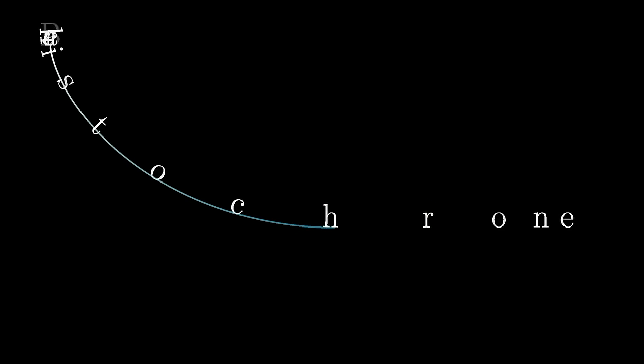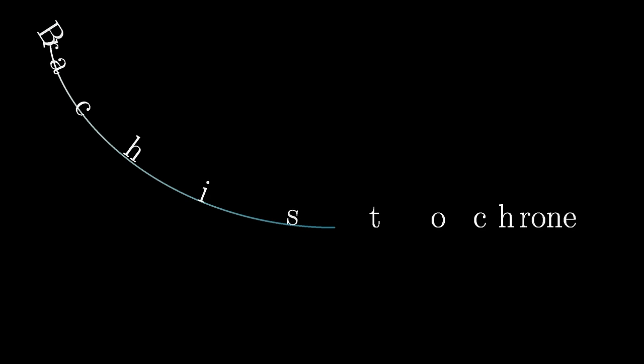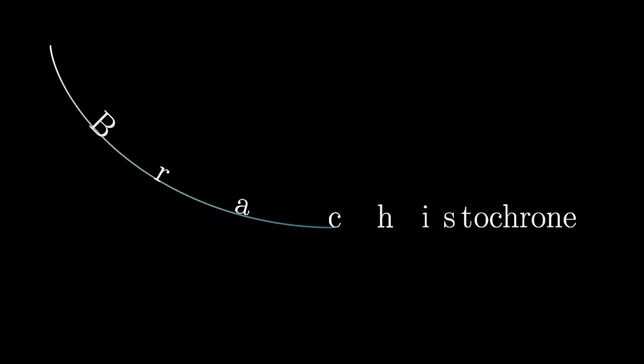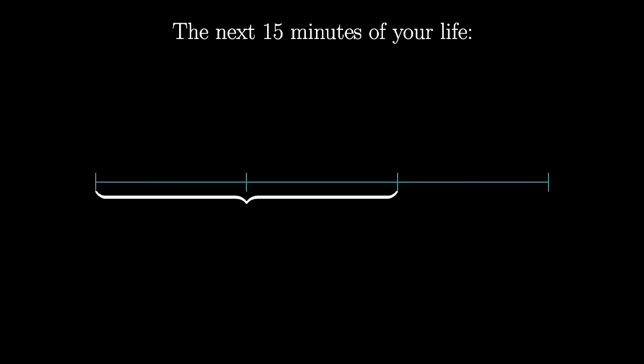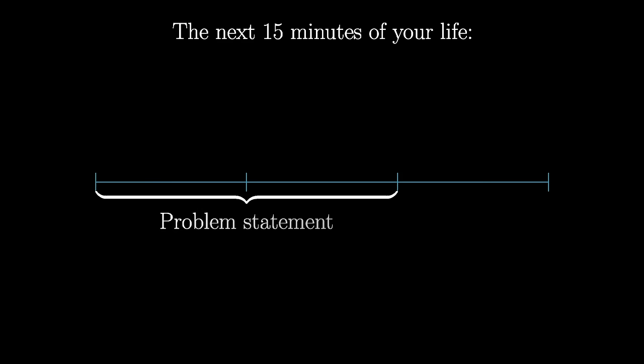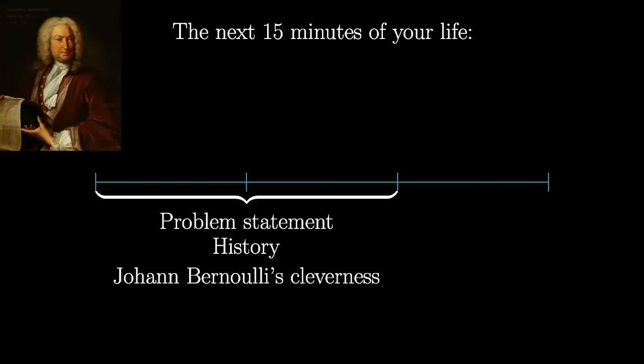In our conversation, we talked about a lot of things, but it was all centering around this one very famous problem in the history of math, the Brachistochrone. For the first two-thirds or so of the video, I'm just going to play some of that conversation. We lay out the problem, talk about some of its history, and go through the solution by Johann Bernoulli from the 17th century.